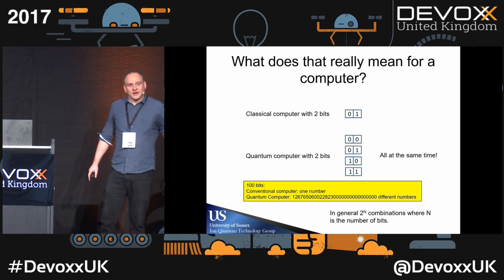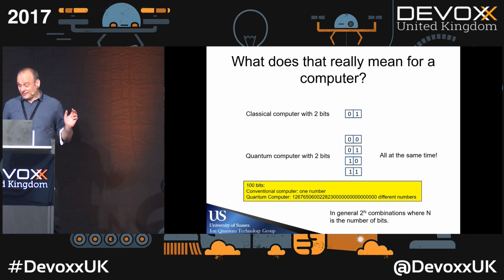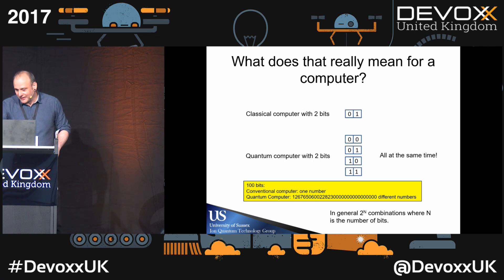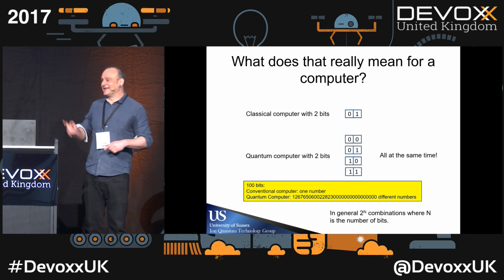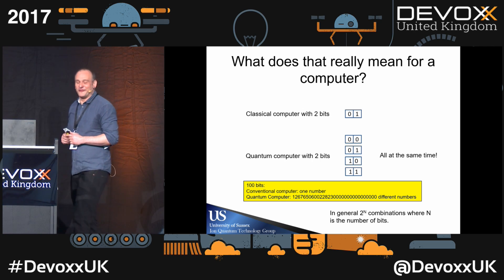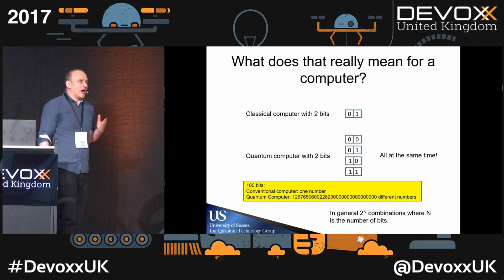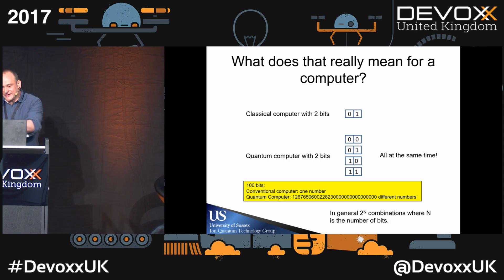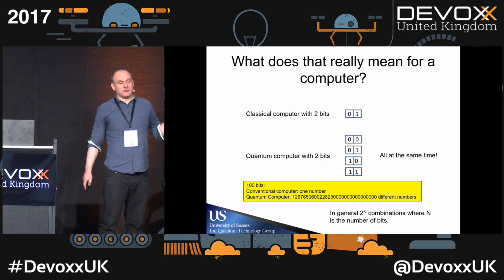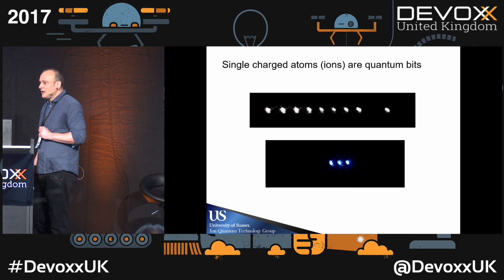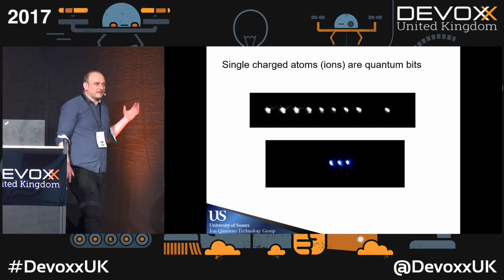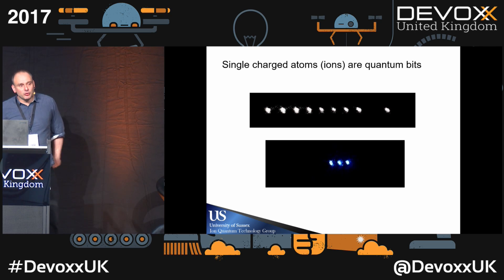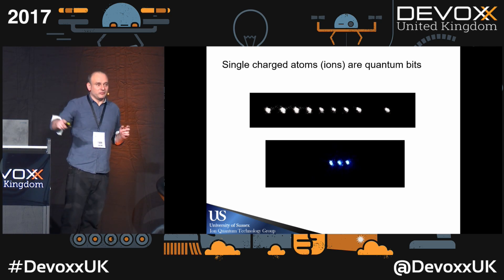Let's move to 100 bits. If I have a 100-bit classical memory, I can write exactly one number into it. If I have a 100 quantum-bit memory stick, I can write a very, very large number of numbers into it simultaneously — two to the power of n combinations, where n is the number of bits. You can see immediately why quantum computers are very powerful. So what our bits actually are: these are individual atoms — charged atoms. Each bright dot you see on the screen is exactly one quantum bit. We illuminate these atoms with a laser beam and image them using a very good imaging system.